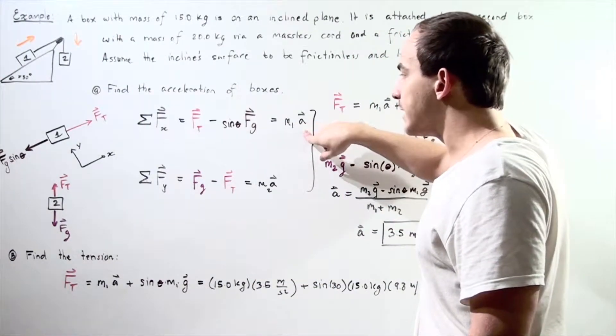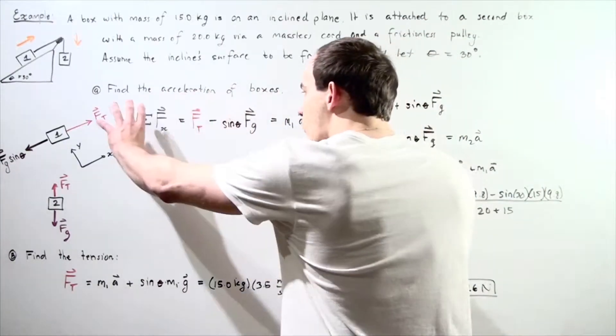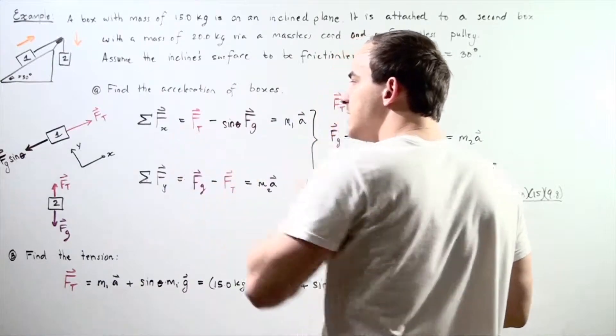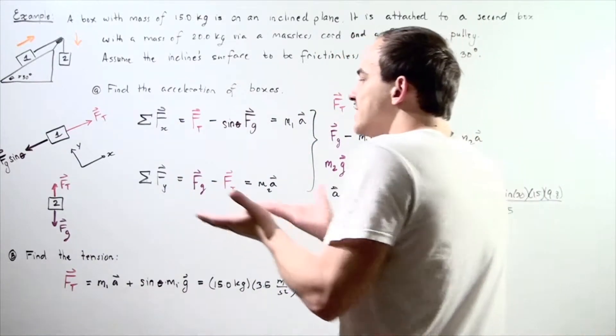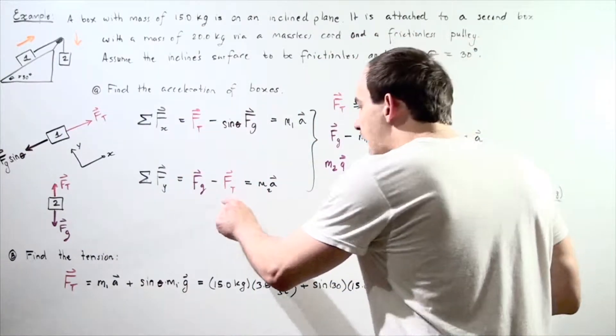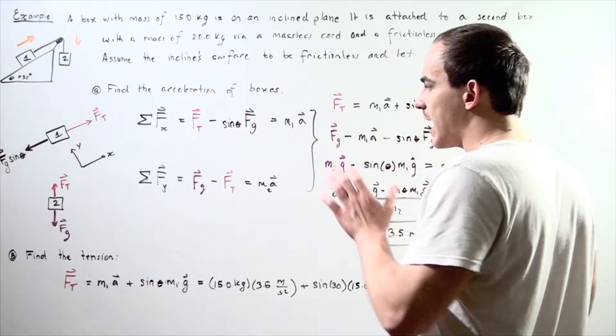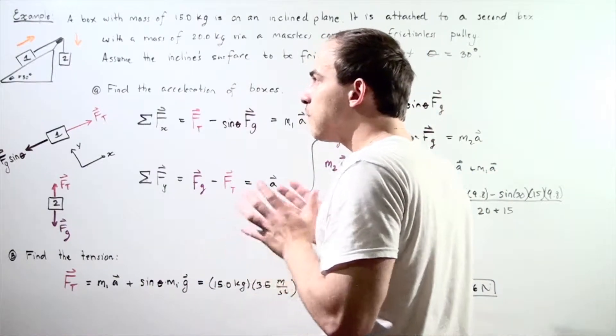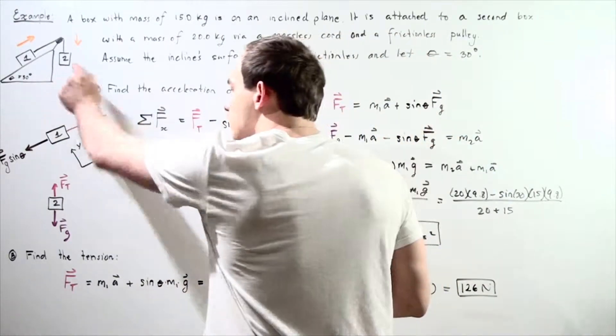Now, this is what we are trying to find. Notice in this form we cannot solve for a because we don't know what f of t is. So we have to set up a second equation then solve for f of t and plug into the first equation as we'll see in just a moment.